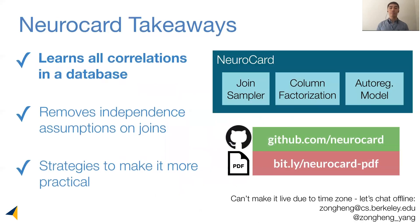To summarize, we have presented a seemingly radical idea that learns all possible correlations in a database. NeuroCard is the first estimator to remove the infamous independence assumptions and other heuristics on joins. We have also presented strategies to make this idea more practical. Because NeuroCard is a proper probabilistic model, one can think of it as a learned synopsis or a learned summary of our data. For more details, please check out our GitHub and paper. Thanks for listening.